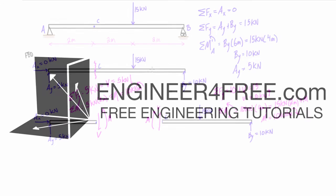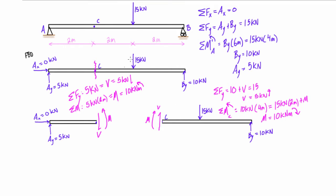Welcome back. In the last video we did our first example looking for internal shear forces and internal bending moments. We picked point C on this beam and calculated the internal shear and internal moment. We found the magnitude of the internal shear at point C to be 5 kilonewtons and the internal moment at point C to be 10 kilonewton meters. Depending on which side we looked at — left or right of the virtual cut — the orientation of shear and moment were opposite to each other. This is totally normal.